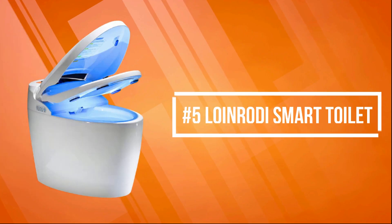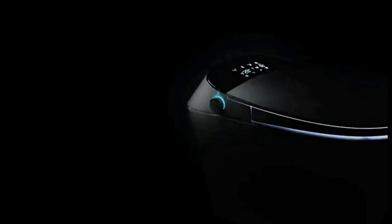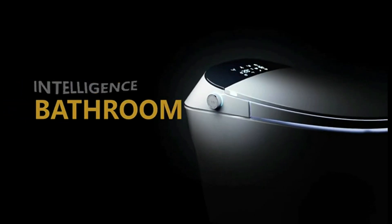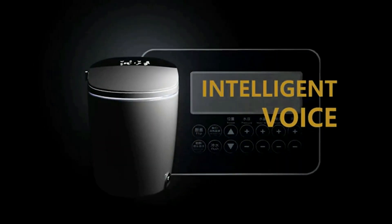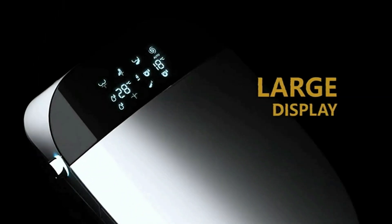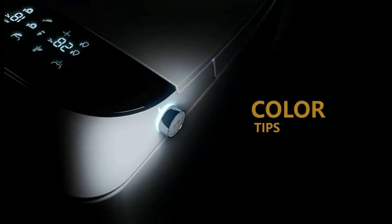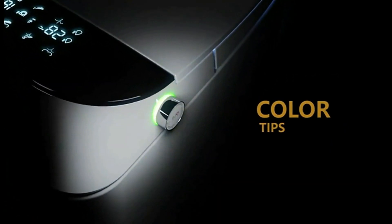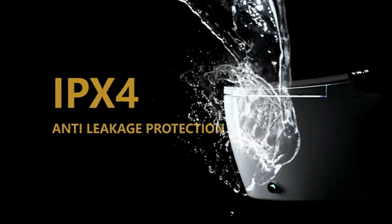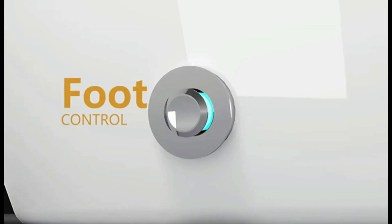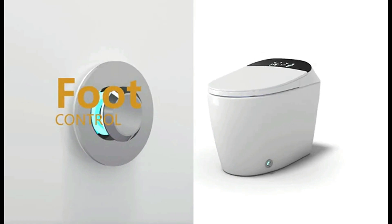At number five on the list is the Loin Roadie Smart Toilet. Loin Roadie toilet designed a newly developed foam splash-proof design. It will make a foam layer on the surface of the water layer to effectively prevent splashes and isolate odors. The enlarged seat ring can be heated in real-time at a constant temperature. You can adjust the temperature at four levels, so you don't have to worry about the cold winter and relieve the numbness of your sedentary legs.